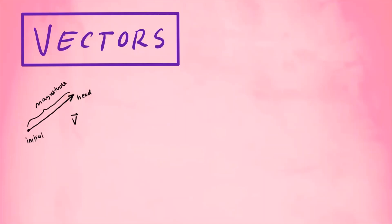Vectors can be given in terms of components. For example, in two dimensions, a vector v can have components v1 and v2, where the first is the x component and the second is the y component. In 3D, you can have three components for a given vector.